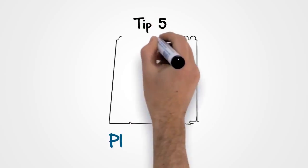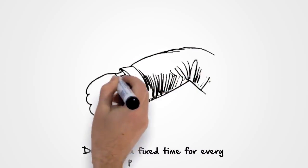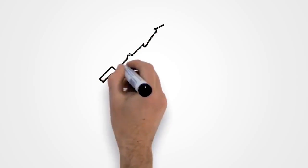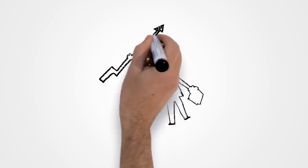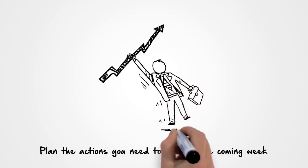Tip five: Plan weekly. Decide on a fixed time every week to plan the week ahead. Use this time to connect with your dream and to plan the actions you need to take in the coming week to move forward with your goals and vision.